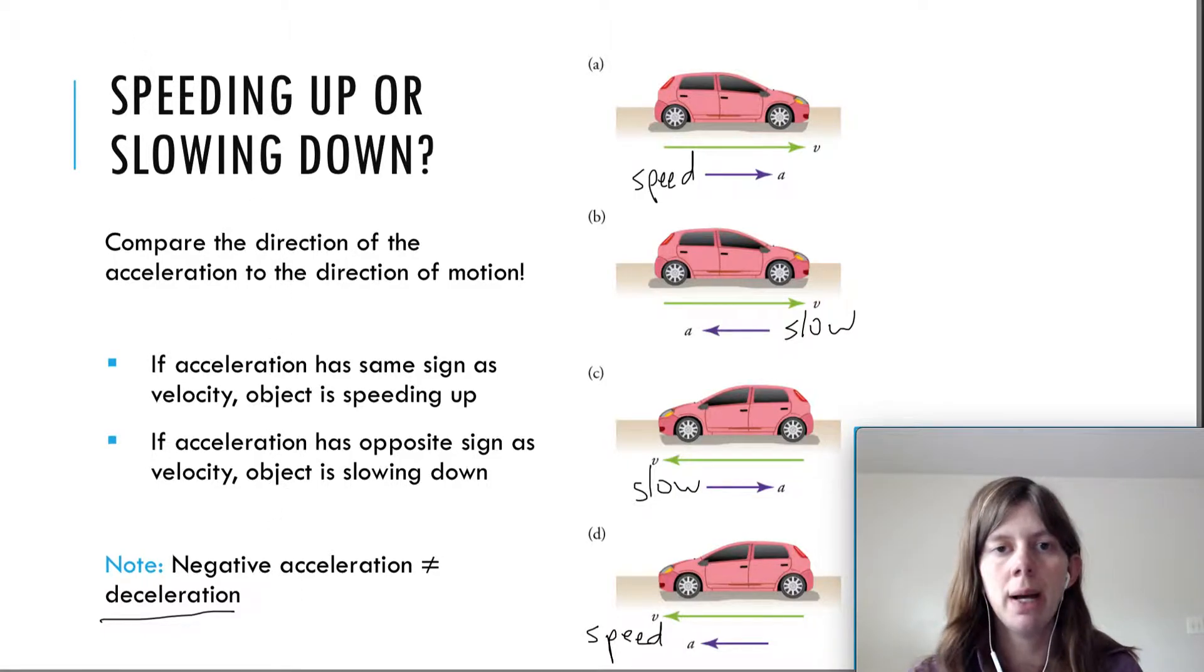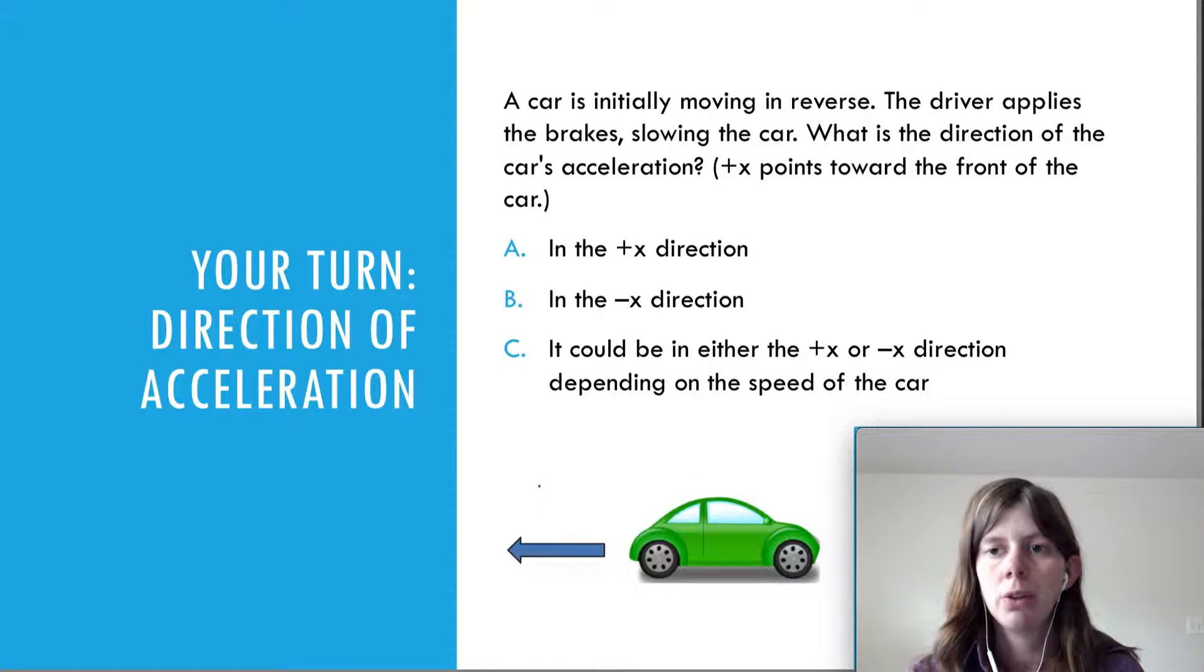So, I'd like to conclude this video. I have two your turn questions. So, hopefully, you'll find them pretty easy because they're reviewing what we just talked about. The first one here says, a car is initially moving in reverse. The driver applies to brakes slowing the car. So, the key word here is that you're slowing the car. What's the direction of the car's acceleration? And we're using positive to the right and negative to the left, as usual. Well, it says that the velocity was in reverse. So, if you're slowing down, remember what we learned about acceleration. It means that acceleration has to be in the opposite direction. So, that means acceleration is actually in a positive x direction.